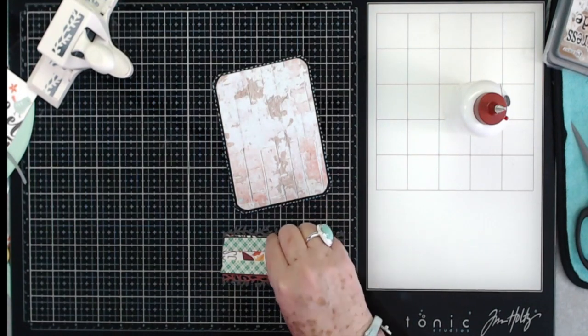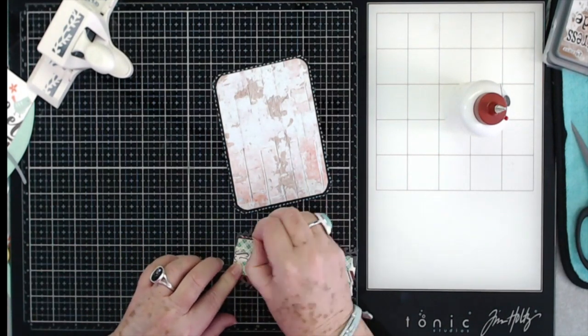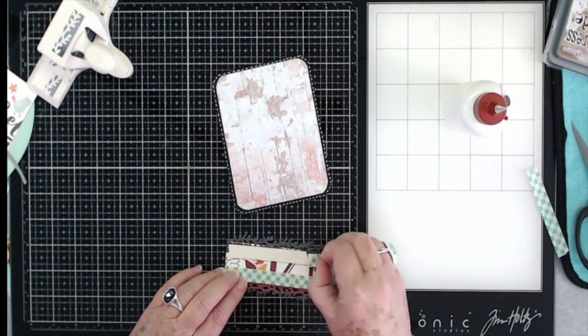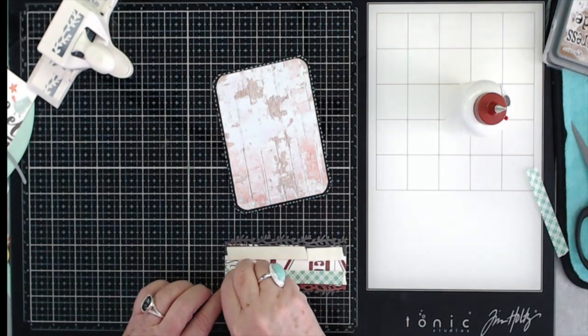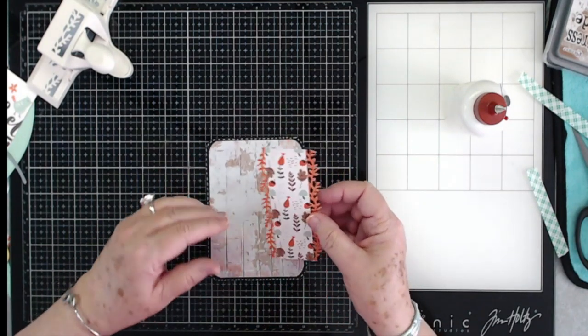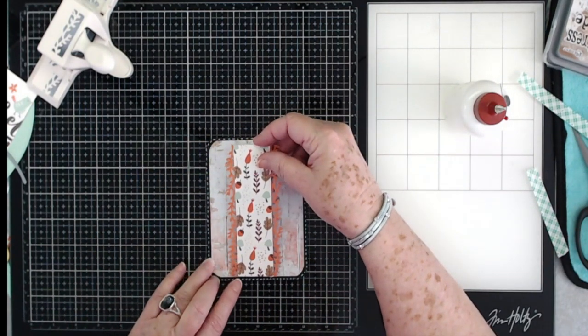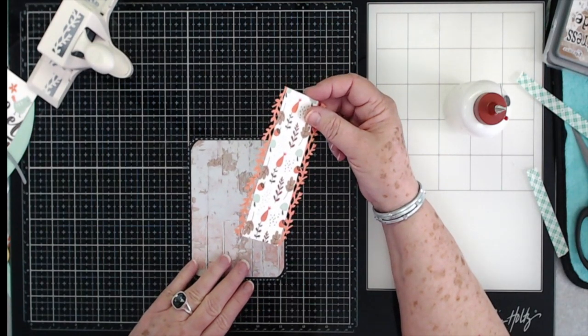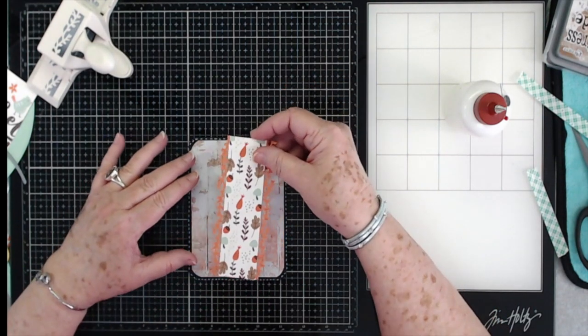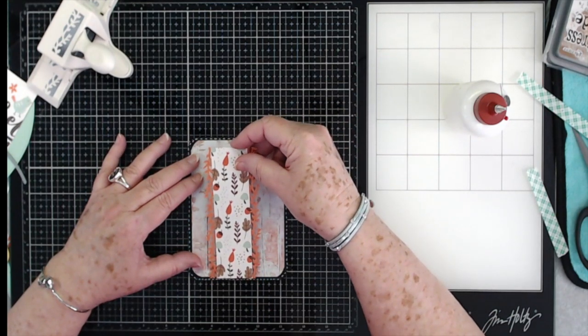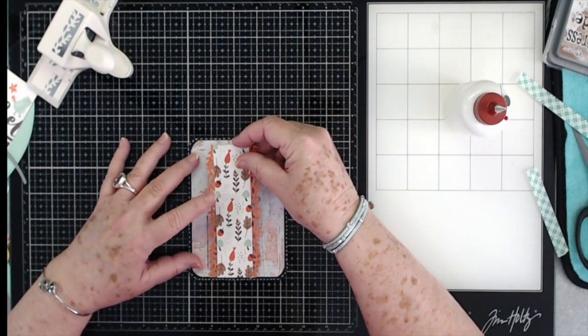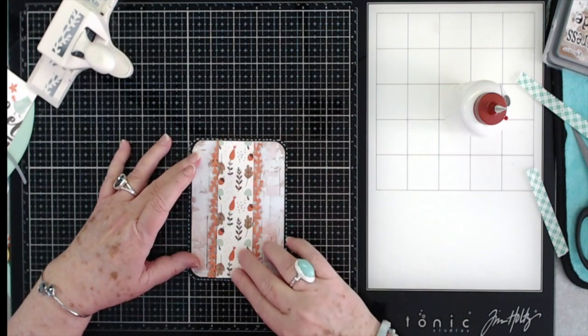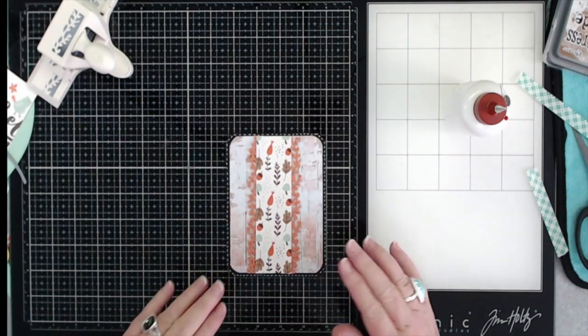There we go. I'm going to put that up on foam tape. Okay, and we're going to put this right down the center as close as we can get anyway. We'll line it up right here so I can use my grid to kind of center it up. There we go, so we've got that.